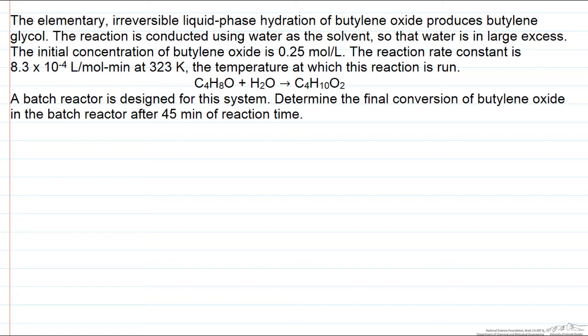You're given information about the initial concentration of butylene oxide and you want to know how much of A you're going to be able to convert under these conditions at 45 minutes of reaction time. The reaction is assumed to be elementary.